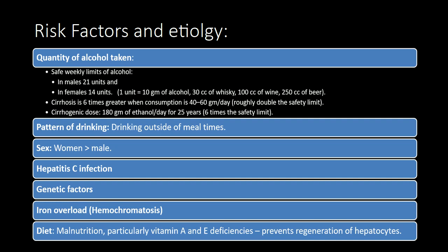A concomitant hepatitis C infection significantly accelerates the process of liver injury. Genetic factors predispose both to alcoholism and to alcoholic liver disease. Iron overload, such as in hemochromatosis, is also a risk factor. Diet: malnutrition, particularly vitamin A and E deficiencies, can worsen alcohol-induced liver damage by preventing regeneration of hepatocytes.